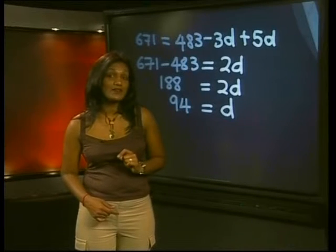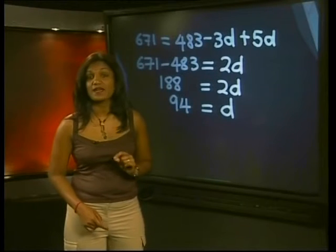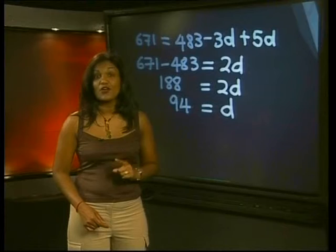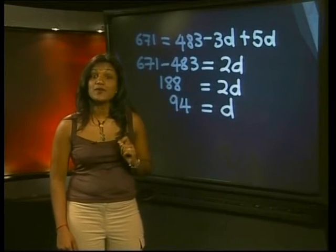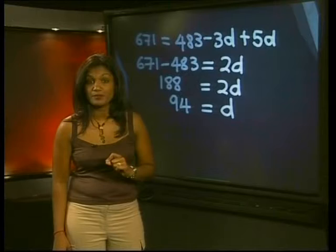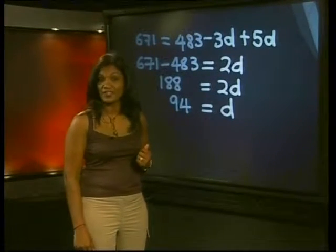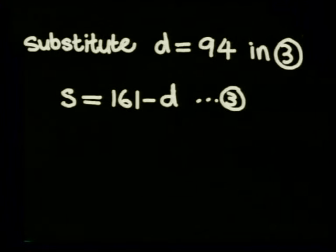What did this number mean? Well 94 passengers paid for a double trip. So what's next? Remember the question asked us how many passengers paid for a single trip. So let's substitute our value for D into one of the other equations. Let's use equation 3.